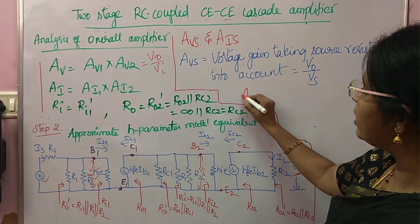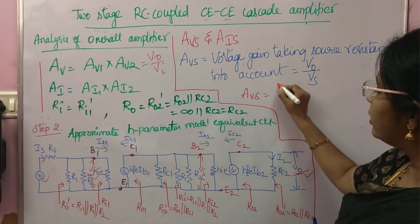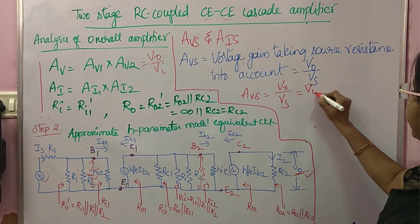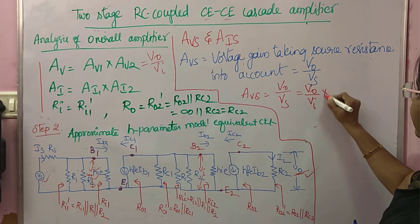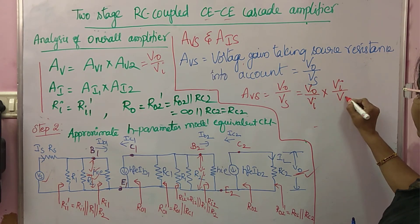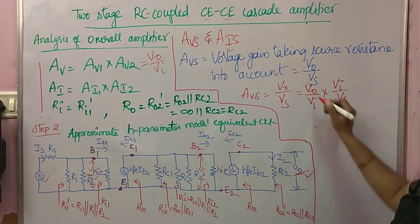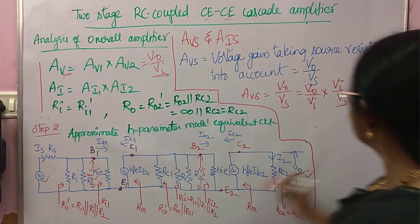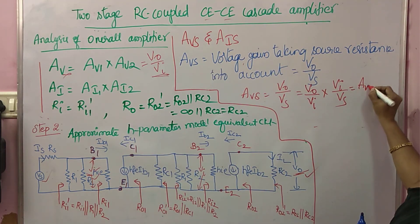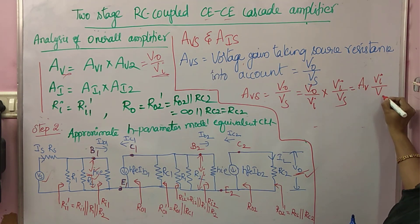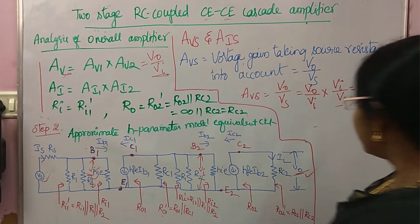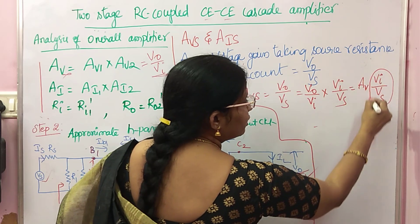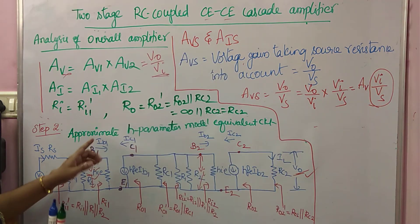AVS, which is V0 by VS, can be written as (V0 by VI) into (VI by VS). V0 by VI is nothing but AV, so AVS equals AV into (VI by VS). Now we have to find VI by VS.